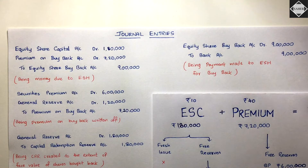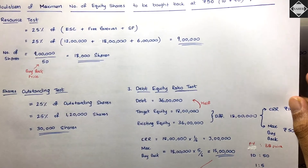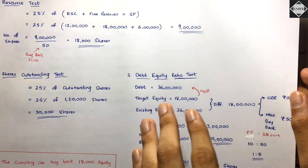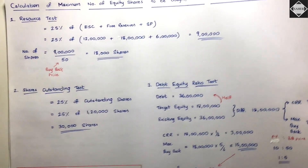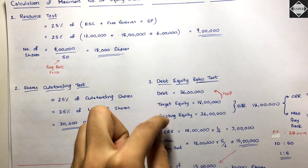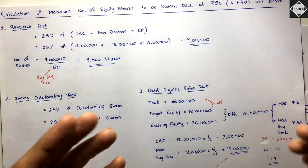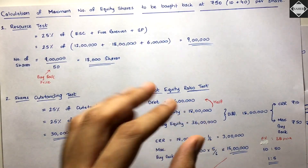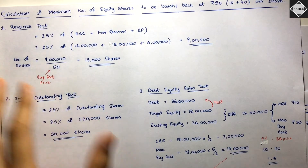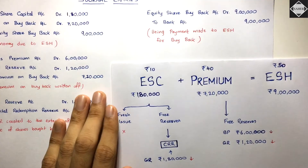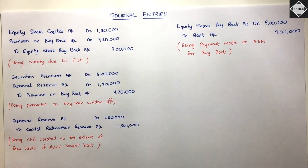Sometimes the question may also ask for the post-buyback debt-equity ratio. In that case, debt remains the same, but you need to calculate the equity after the buyback and divide debt by post-buyback equity to get the ratio. If you have any doubts, comment below or message on Instagram. See you in the next video!